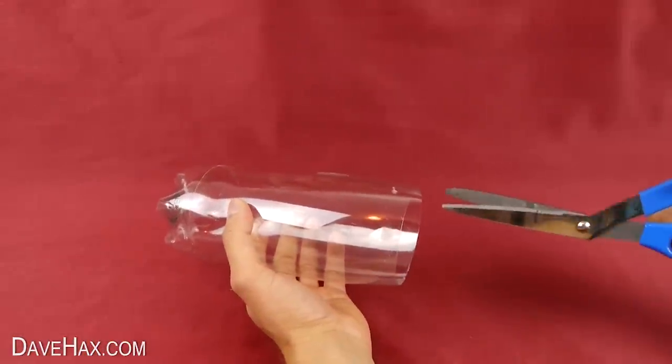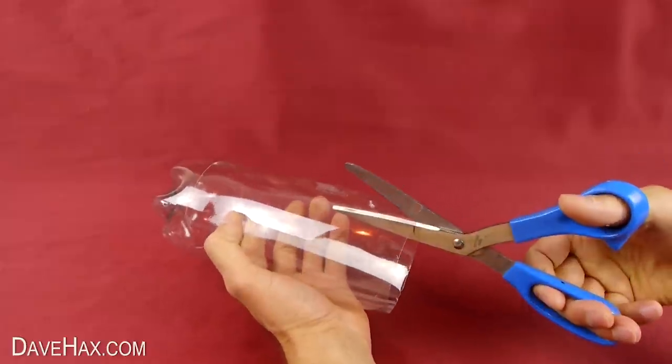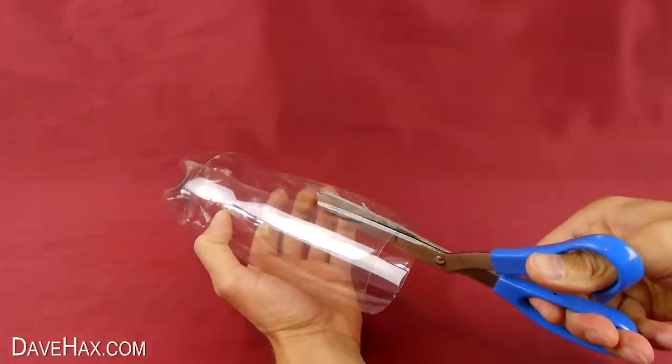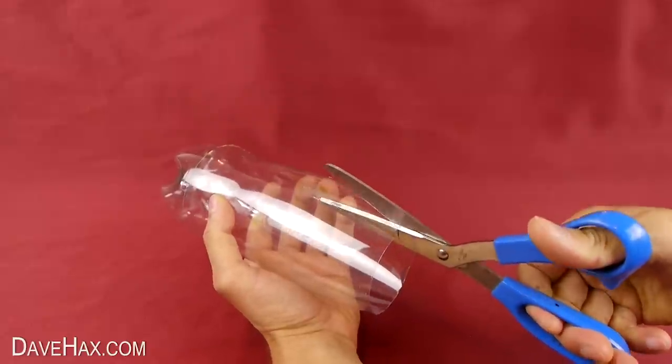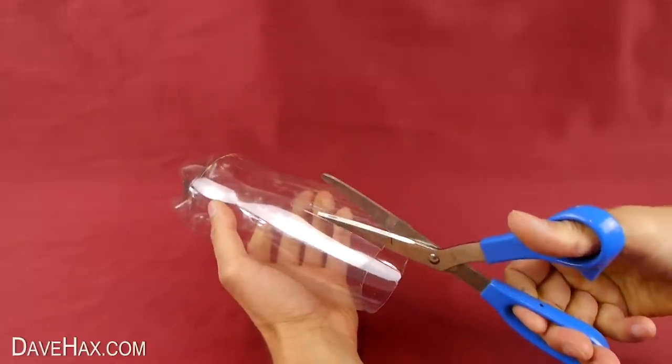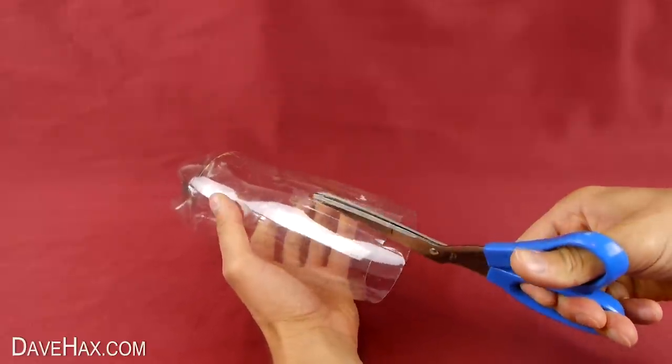Take your bottle and line up the end with the mark on your scissors, then cut straight down towards the bottom of the bottle. Move the scissors around about half a centimeter and do exactly the same again. We need to do this around the entire bottle.